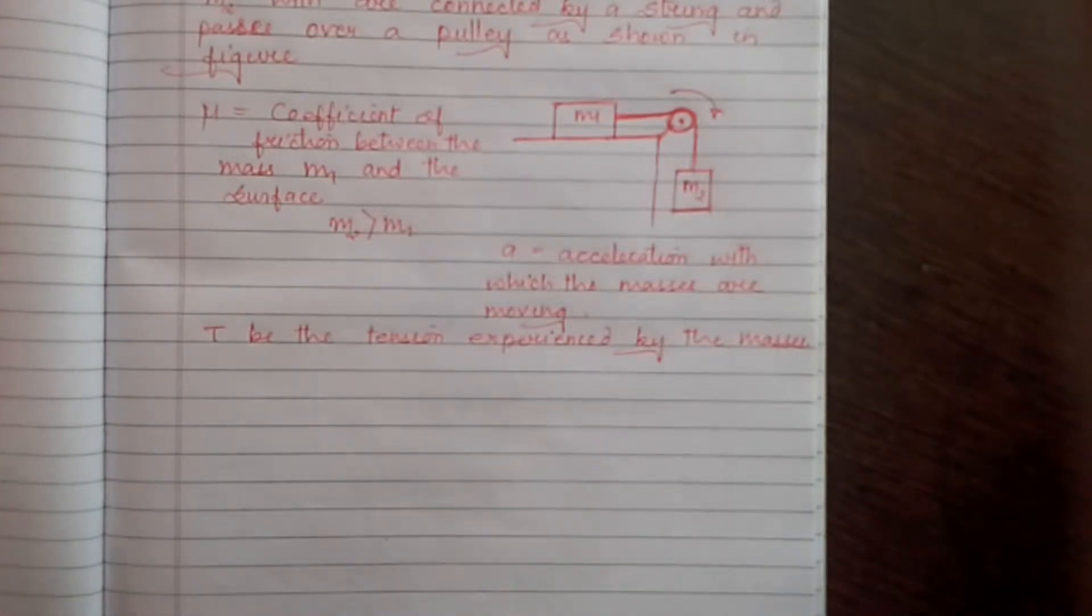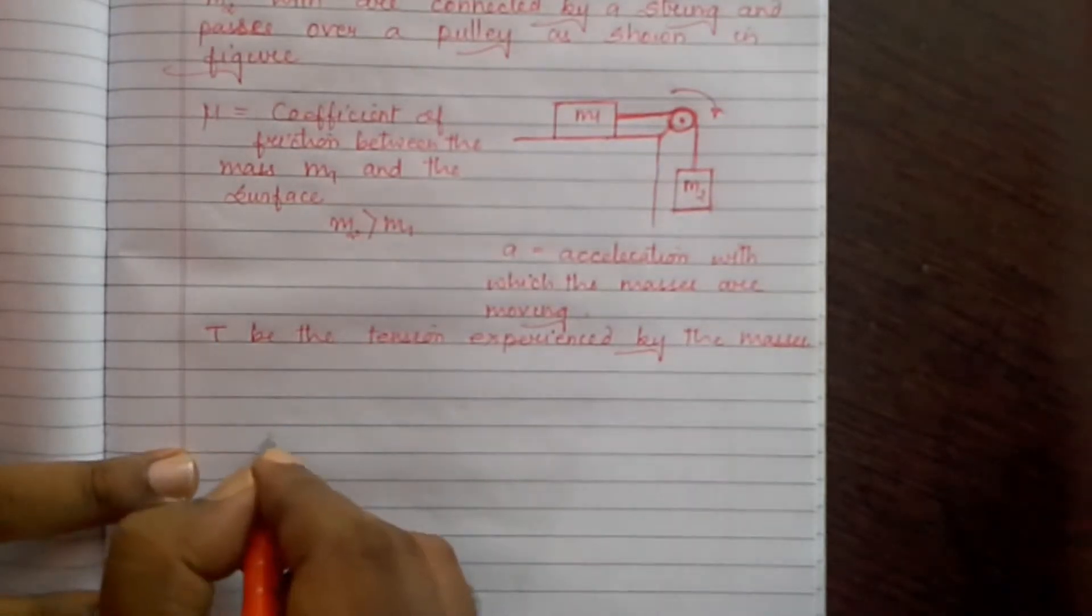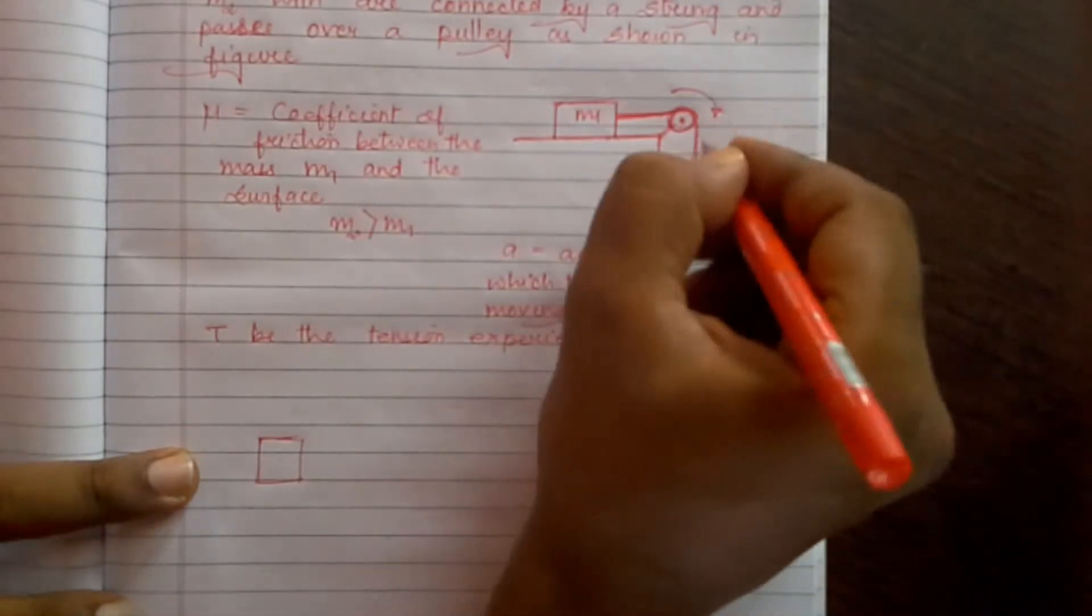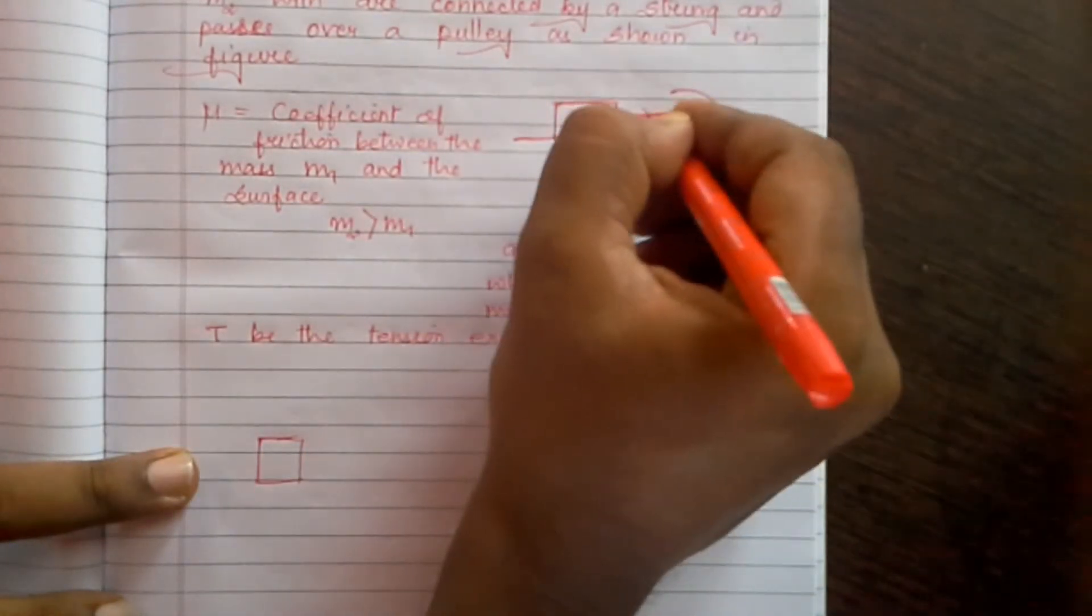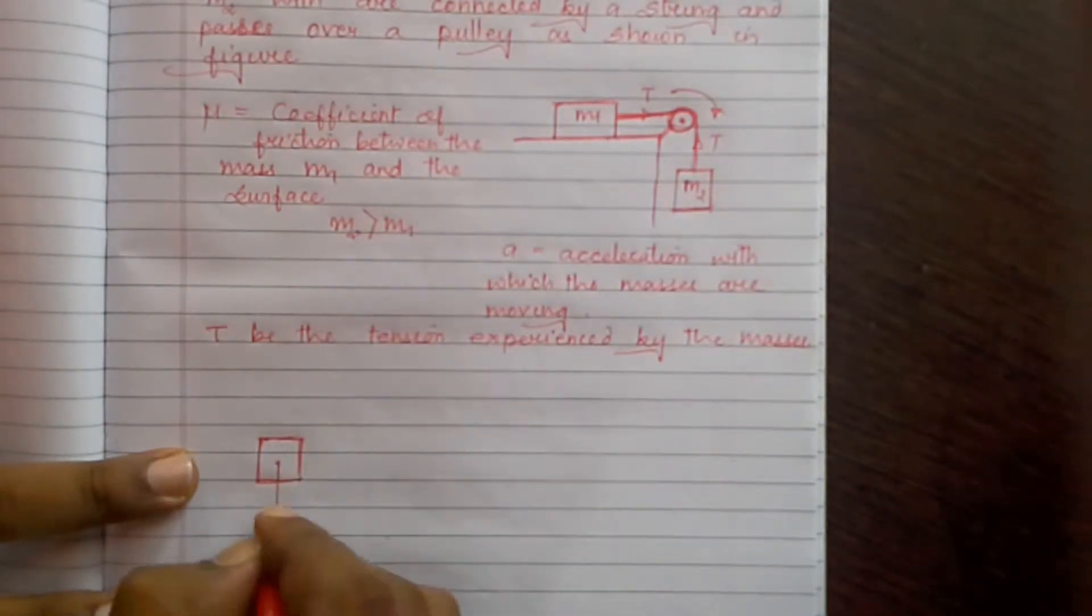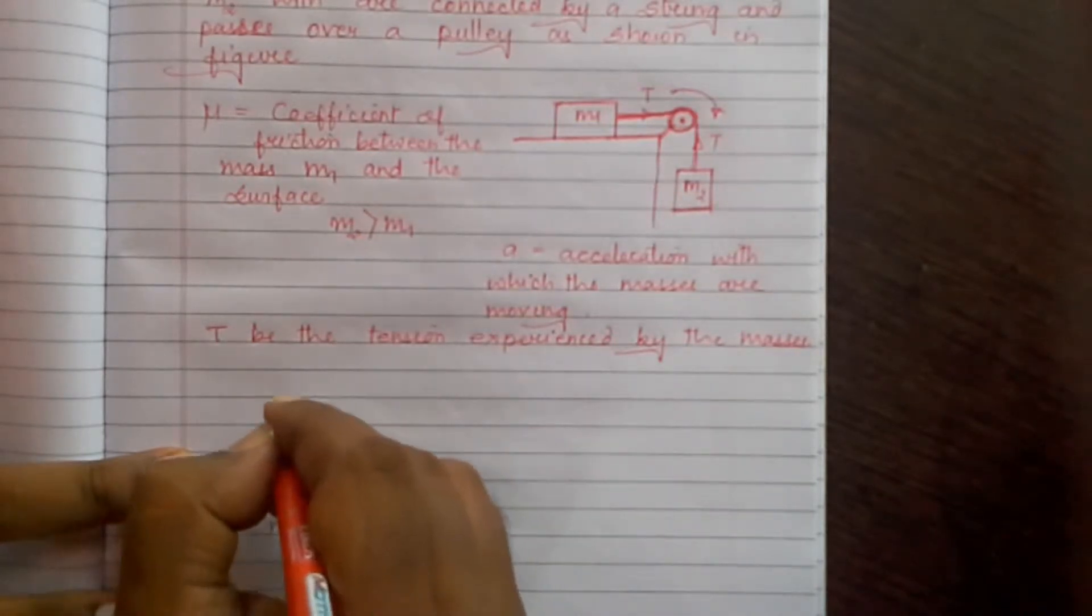Let's first do this for mass M2. We can indicate the tension here as T, so M2g acting downward and tension acting upward. Since the body is moving down, we can say that M2g is greater than T.